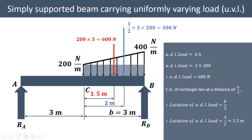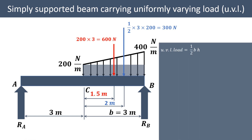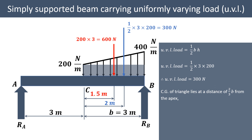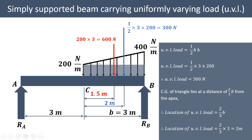Now concentrate on the blue triangular part related to the uniformly varying load. The UVL varies from 0 to 200 Newton per meter, so the UVL load equals one-half times base times height = 0.5 times 3 times 200 = 300 Newton. The centroid of the triangle lies at two-thirds of the base from the apex, so its location is 2/3 times 3 = 2 meters from the apex of the triangular distribution.